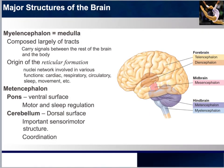We'll start at the bottom and work our way to the top. The myelencephalon — the medulla, shown in this baby blue area — is composed largely of tracks that carry signals between the rest of the brain and the body. Afferent nerves carry sensory information from the body to the brain, and the brain responds by sending efferent nerves that generate motor output. This is also where we find the origin of the reticular formation, a nuclei network involved in various functions.